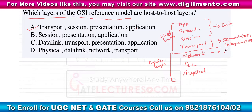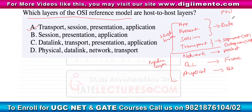In the network layer, the data unit is called a packet. In the data link layer, it is called a frame. In the physical layer, it is simply a bit. So those are the protocol data units for all layers, and the host layers are application, presentation, session, and transport.